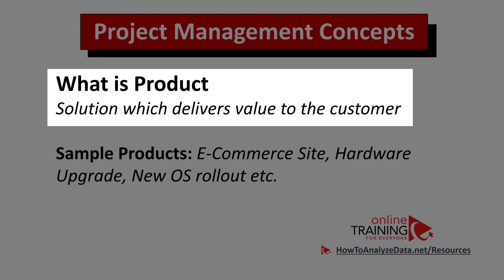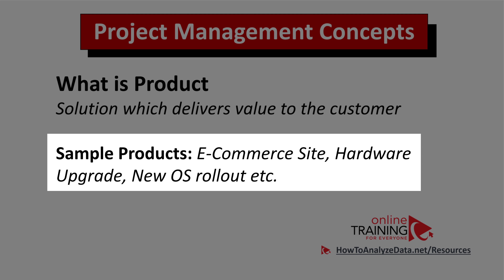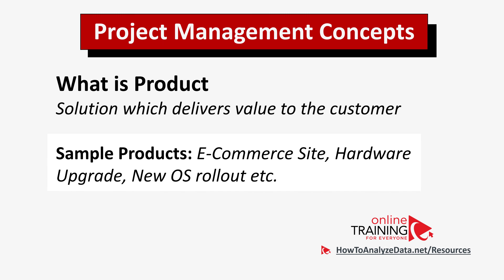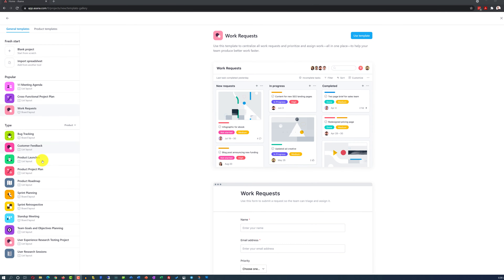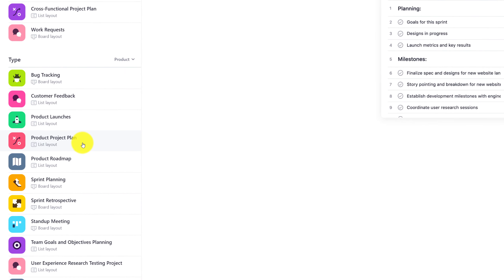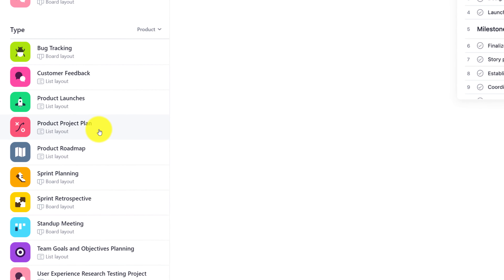So what is a product in a business environment? Typically, it is a solution which delivers value to customers, and you need a project team to deliver this solution. Some product examples might be building an e-commerce site, doing a hardware upgrade for the organization, or rolling out a new operating system. For these types of projects, you might consider building a project plan, and Asana provides you with a good option for that.